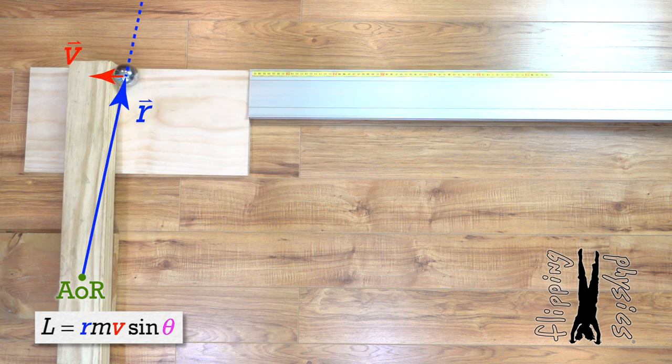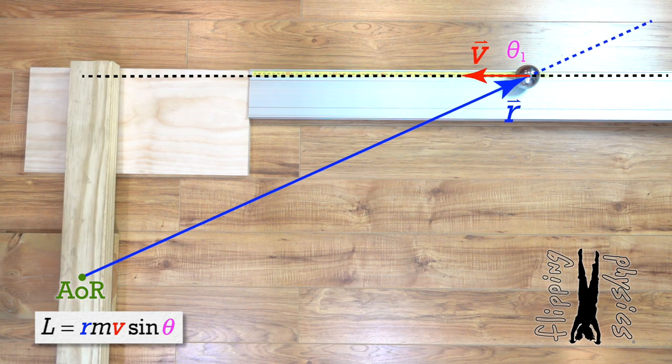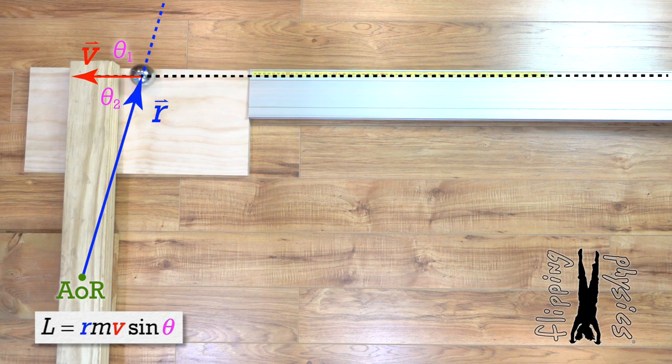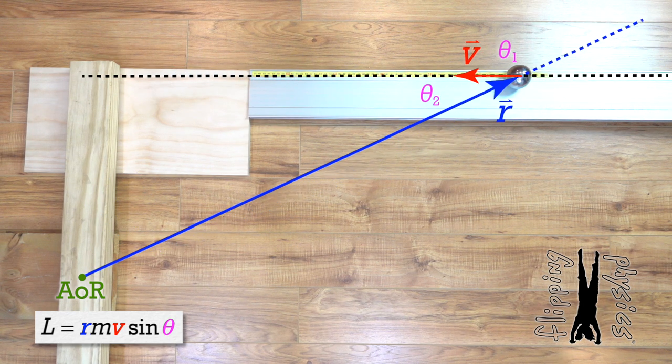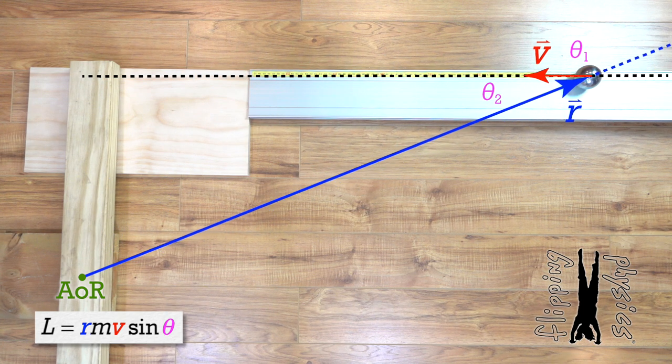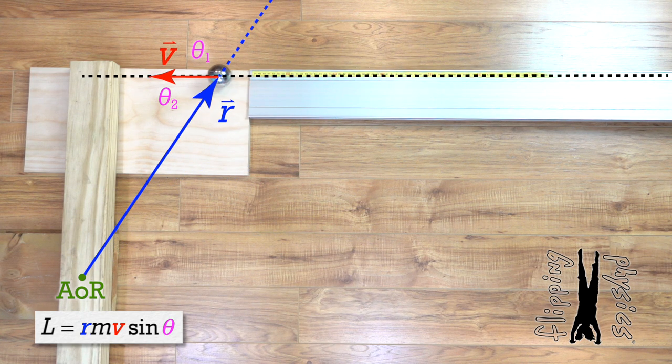Now, the angle in our angular momentum equation for the point particle, should that be theta 1 or theta 2? Theta 1? Theta 2. Actually it's theta 1. The direction of the r vector is up and to the right and the velocity vector is to the left. So, the angle between those two directions is theta 1.